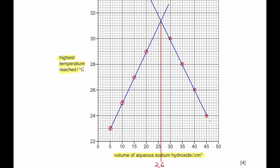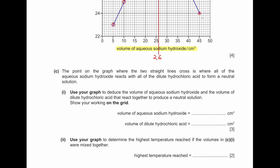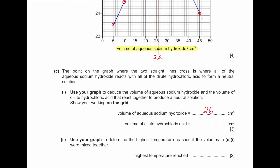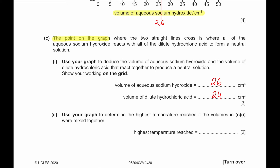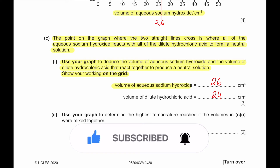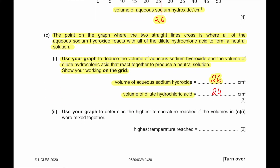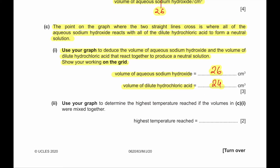The two straight lines cross at 26 cm³ NaOH giving a temperature of 31.3°C. Part C: the point where the two straight lines cross is where all of the aqueous sodium hydroxide reacts with all of the dilute hydrochloric acid to form a neutral solution. Use your graph to deduce the volumes: volume of aqueous sodium hydroxide is 26 cm³, and since the total must be 50 cm³, the volume of dilute hydrochloric acid is 24 cm³.